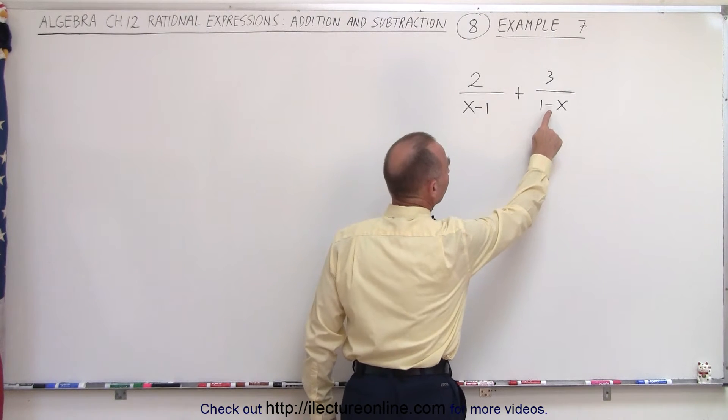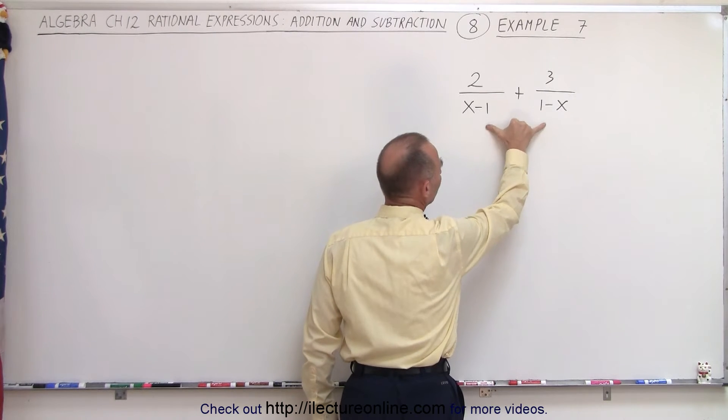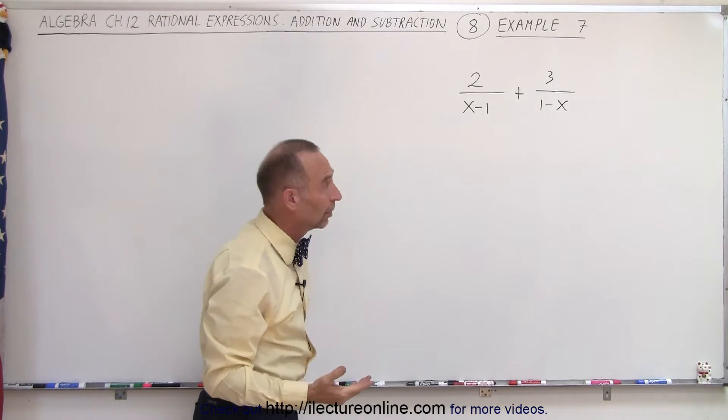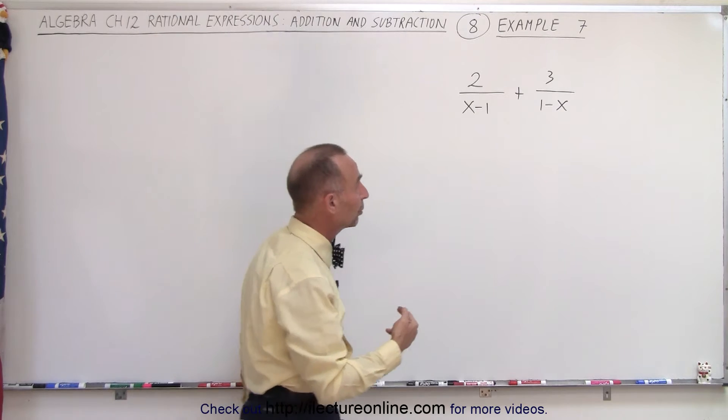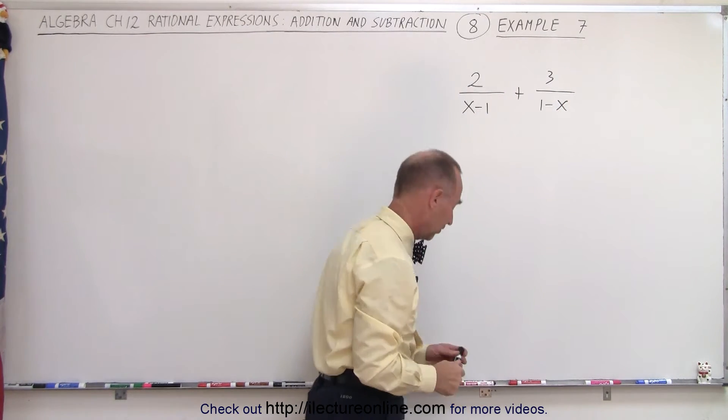If we multiply the denominator here by negative 1, that will then turn into an x minus 1 and the two denominators will look the same. So what that means is that I'm going to multiply both the numerator and the denominator by negative 1 to make them the same.